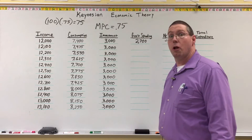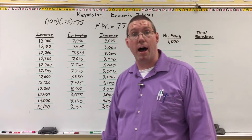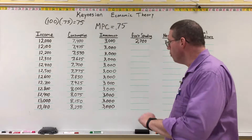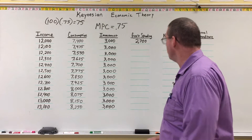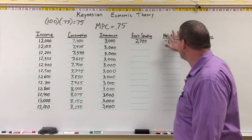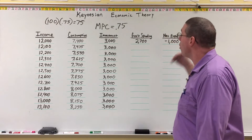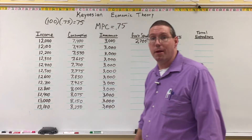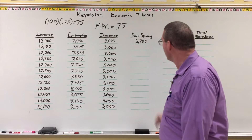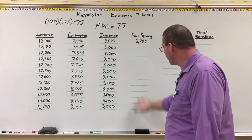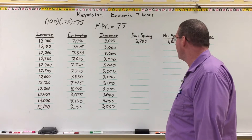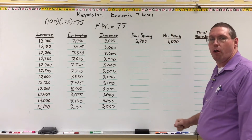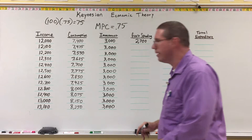Similarly, assumption number five also tells us that government spending and net exports are not affected by changes in income. Therefore, government spending is going to be 2,700 all the way down, and net exports is going to be negative 1,000 all the way down.